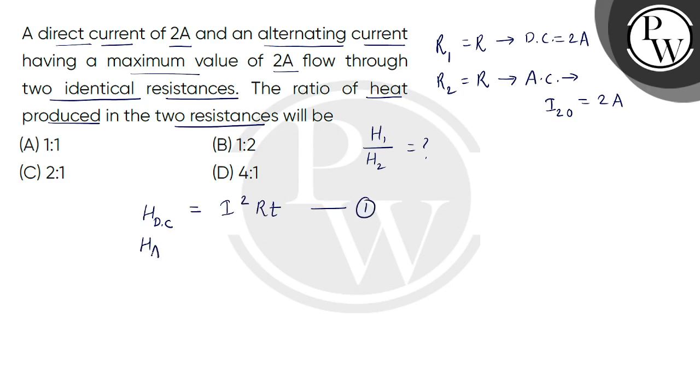Now for AC current, heat produced will be I RMS square multiplied by RT. This is equation 2, where RMS means the effective value, that is the peak current divided by square root of 2.